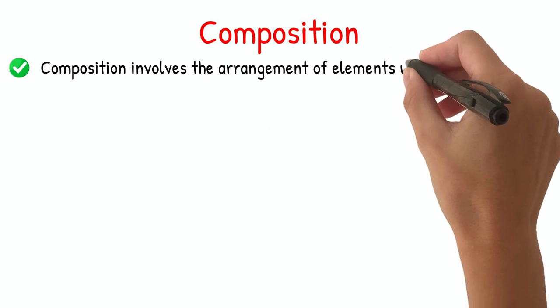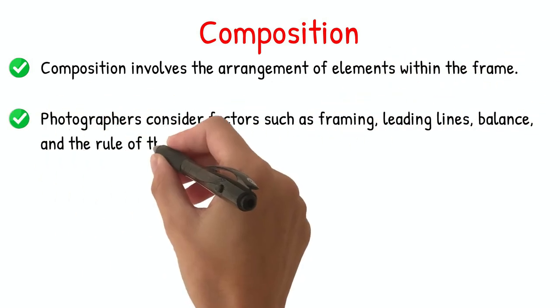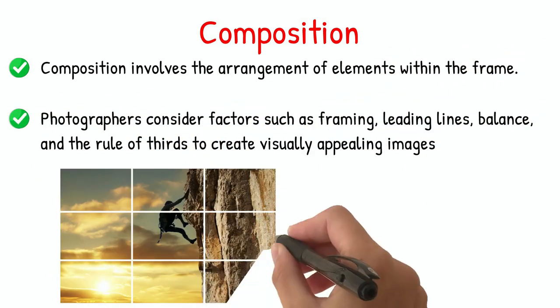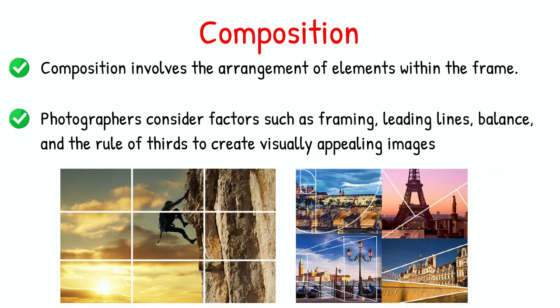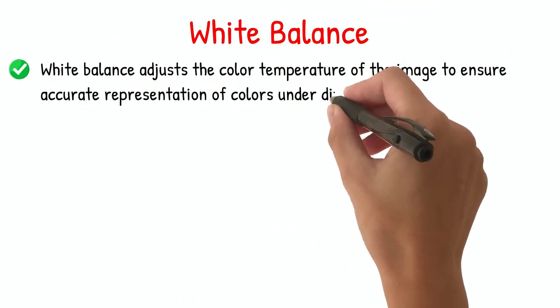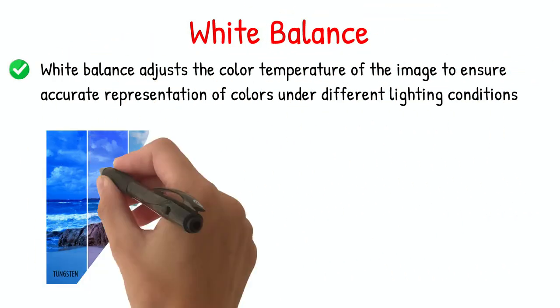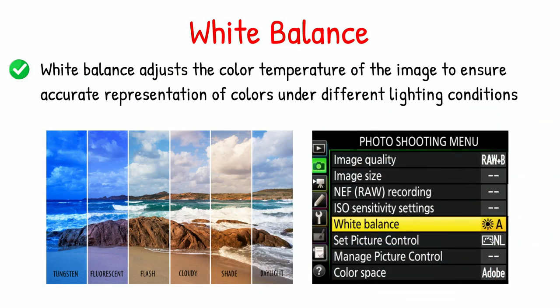Composition involves the arrangement of elements within the frame. Photographers consider factors such as framing, leading lines, balance, and the rule of thirds to create visually appealing images. Light balance adjusts the color temperature of the image to ensure accurate representation of colors under different lighting conditions.